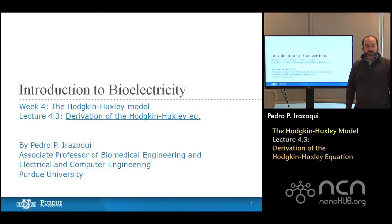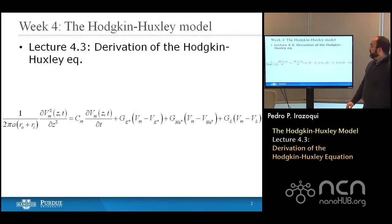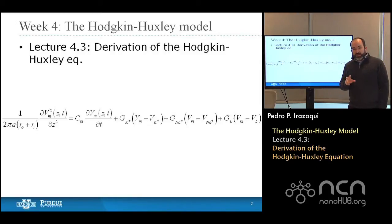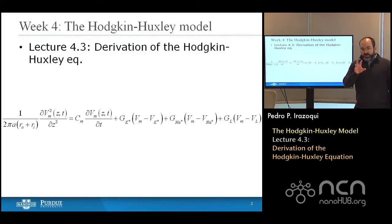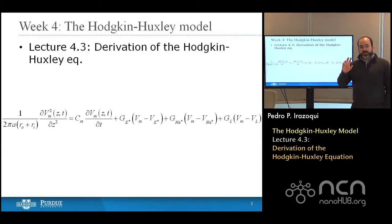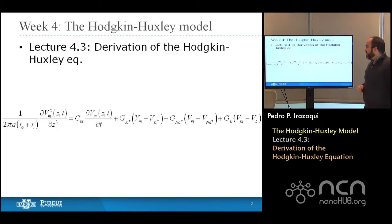Hello and welcome back to Nanohub U's course, an introduction to bioelectricity. We are in week four and we are going to cover lecture 4.3, the derivation of the Hodgkin-Huxley equation. So in 4.1, we talked about Hodgkin and Huxley and the world in which they lived and the intellectual environment in which they grew up. In lecture 4.2, we looked at the core conductor equation and the cable equation, their deficiencies, and came up with an equivalent circuit that we hope will compensate for active changes in the membrane conductance and give us a new and better equation. And that equation is what we're going to derive here.